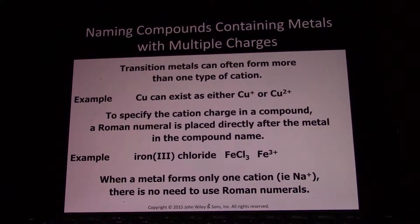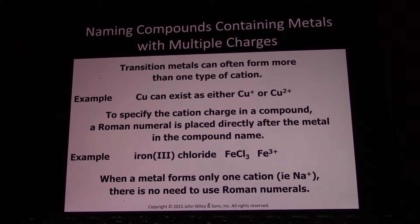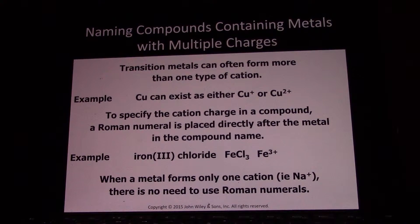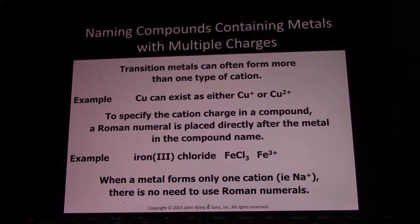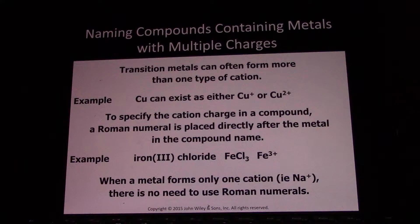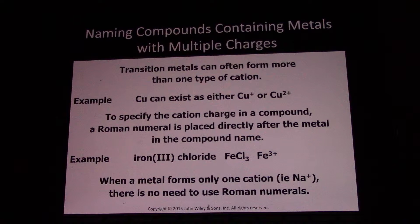You don't use Roman numerals with metals that can only have one charge, because every chemist knows sodium is always plus one, potassium is always plus one, magnesium is always plus two, calcium is always plus two, aluminum is always plus three. There's no need to specify that. But in cases where there are multiple possibilities, a chemist does have to articulate what the charge on that metal ion is.